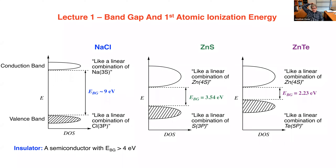Sodium chloride has a huge band gap because the ionization energy and electron affinity of the elements are very different. For zinc telluride and zinc sulfide, the conduction band is made up of empty zinc 4s combinations. The valence band is made up of filled sulfur and tellurium p-orbital combinations — those are the valence orbitals of the element, just as you'd expect to be involved in bonding.